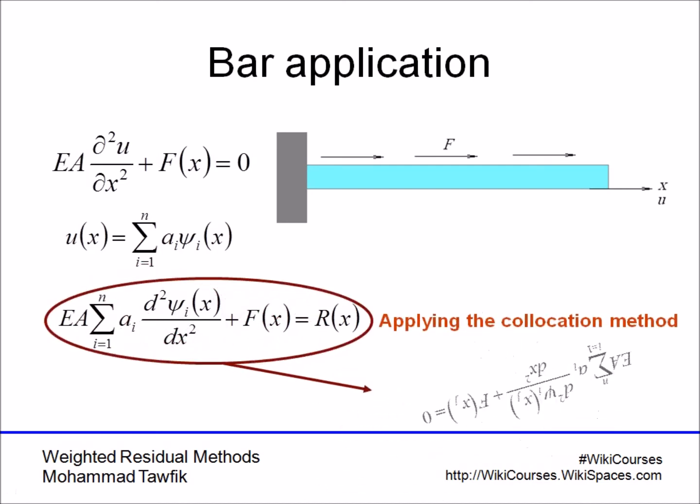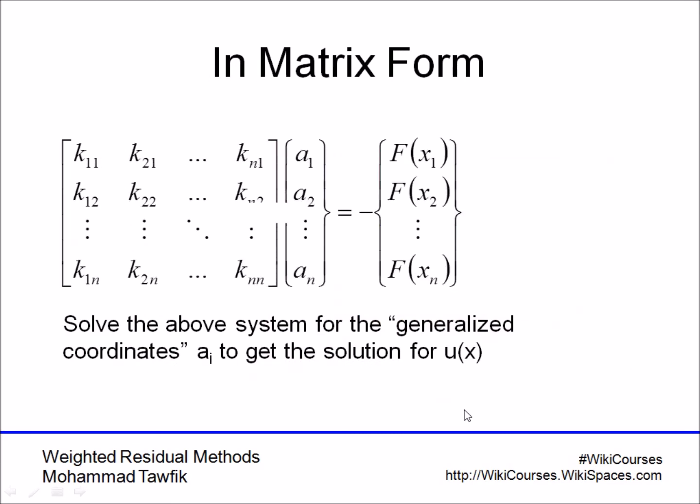Now, to apply the collocation method, we have to select some internal points, some points inside the domain between zero and L. These points we call X_Js, and then plug in the value of X_J here and force it to be equal to zero. At each X_J, you'll get an equation that includes all the unknown coefficients a_i.